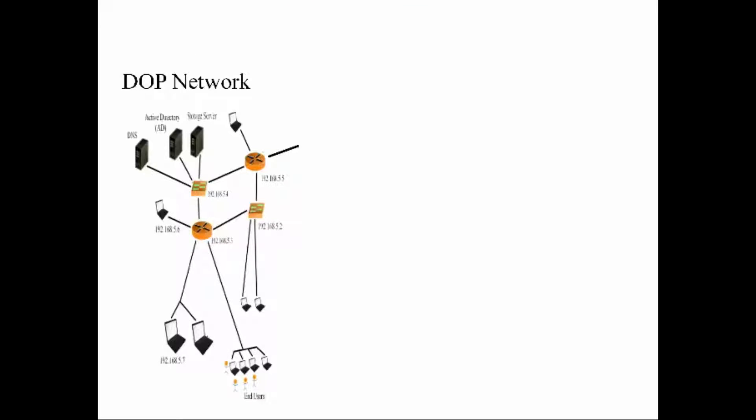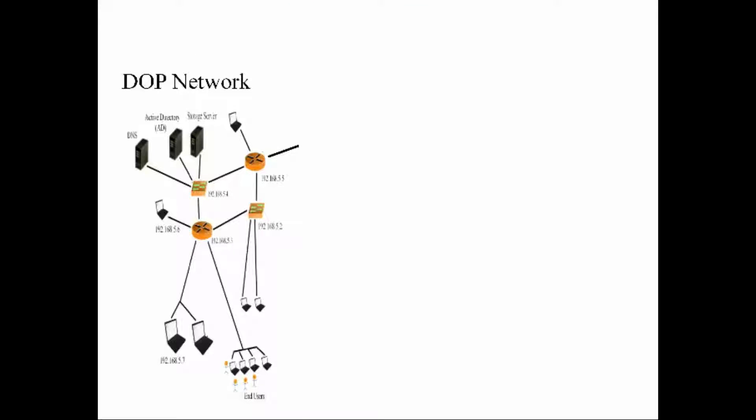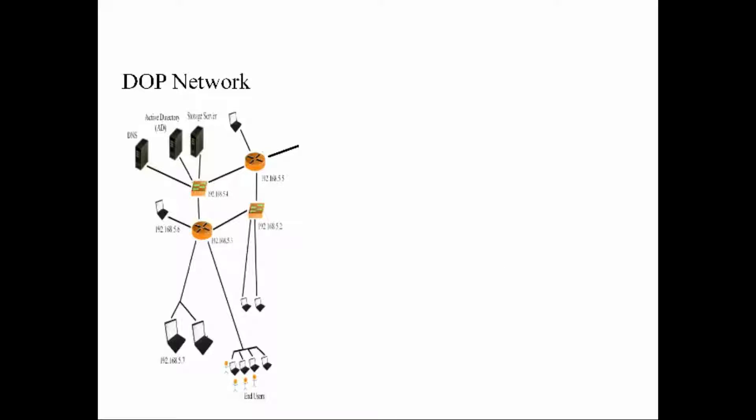Let's draw a network diagram real quick. The internet is pretty much a whole bunch of home and enterprise networks connected to each other. Name anything you find on the internet. Whatever you can think of is part of a network. Google, for example, has its own network, its own enterprise network.